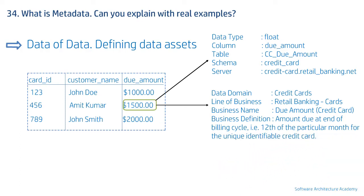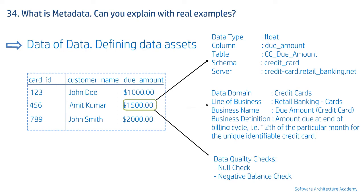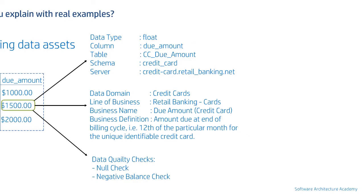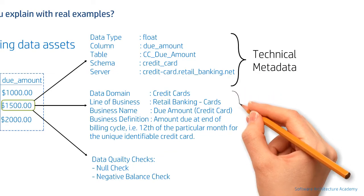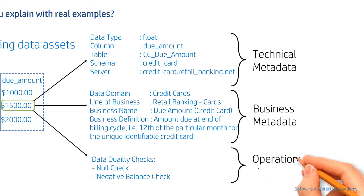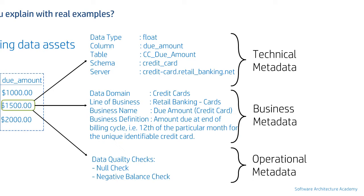And if I want to understand whether this data can be trusted, I can look at information about the data quality checks applied on this field. This first piece — how to locate the field — is called technical metadata. The second piece, which helps us understand business meaning, is called business metadata. The third piece is called operational metadata.